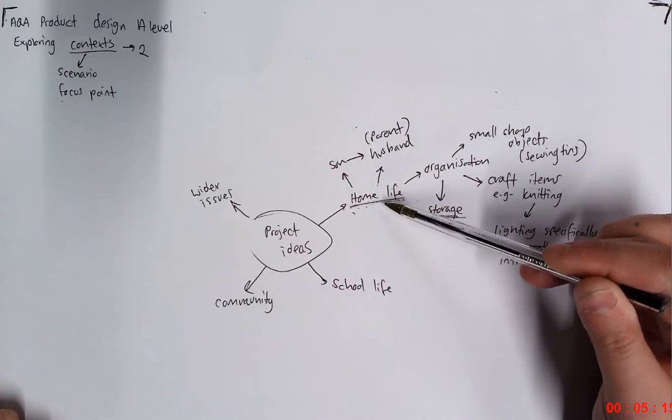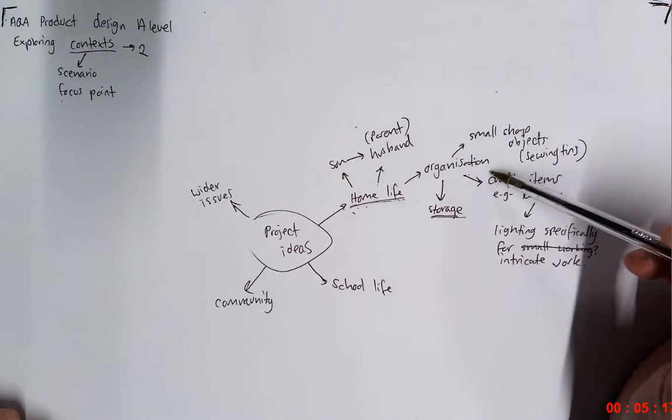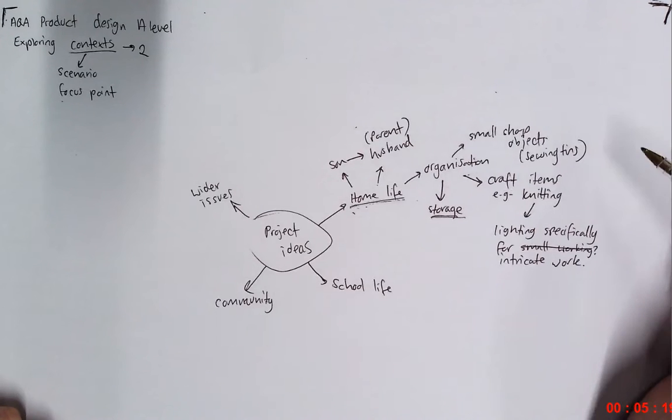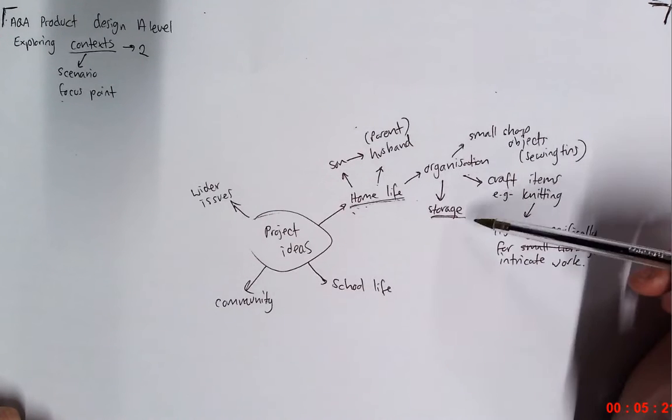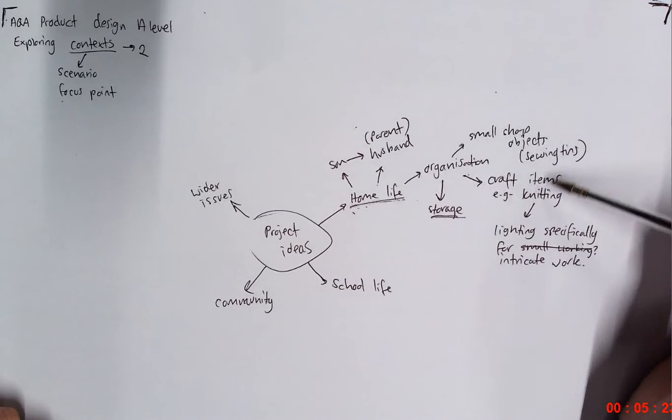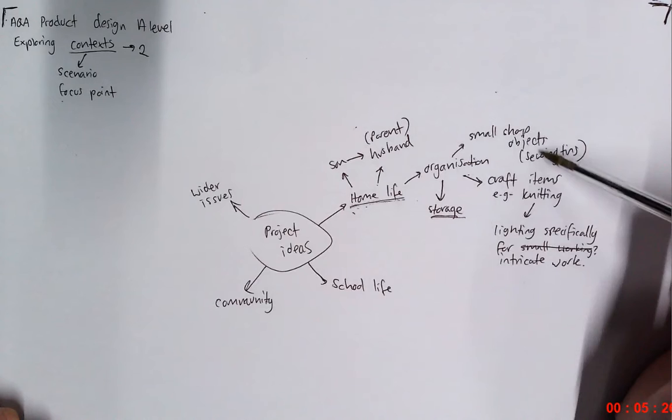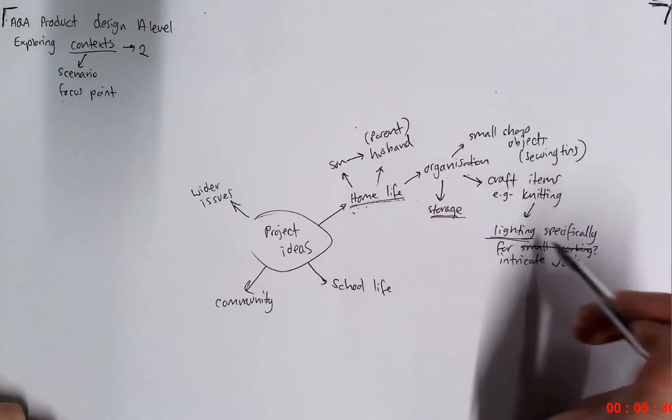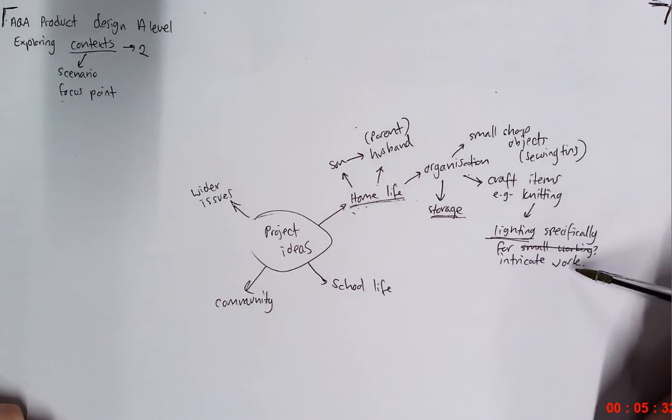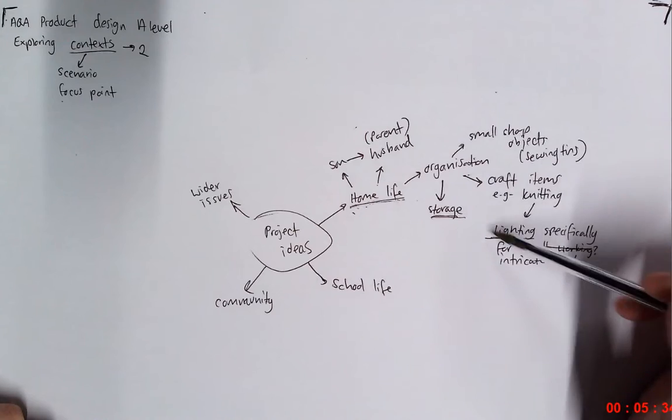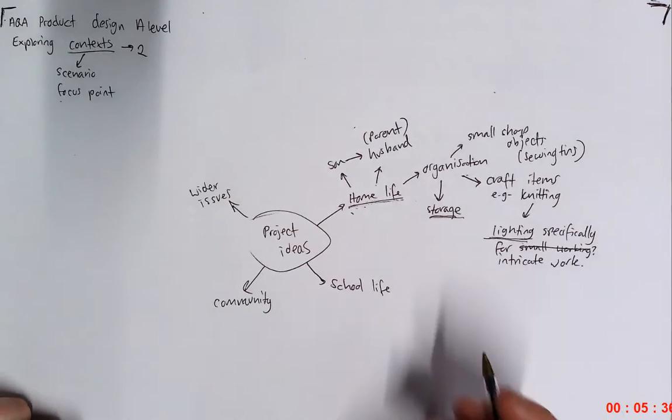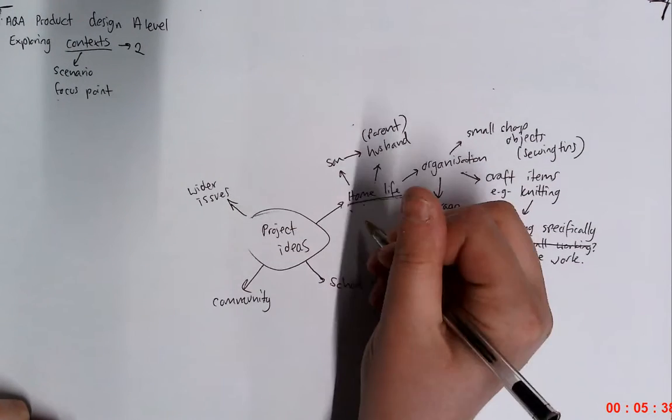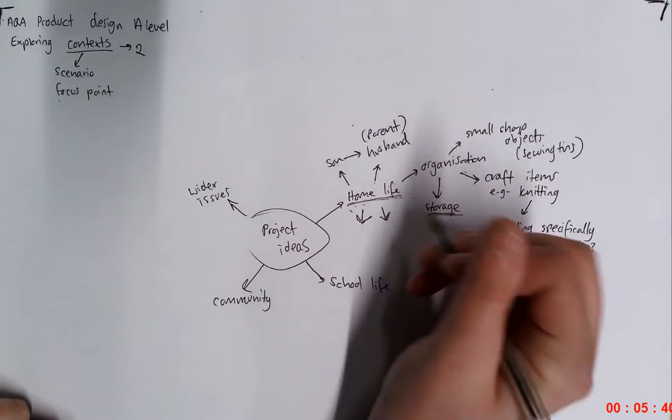So already, I'm just looking at my home life. I've identified that organisation is a potential issue. And I've found that a storage solution would be really beneficial. And I've got a nice area of which I can focus the storage on. And now I've got a completely different concept, maybe lighting specifically for intricate work. So already I've got two potential ideas.